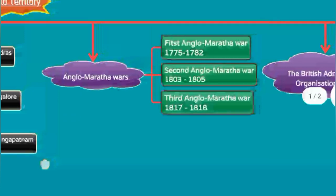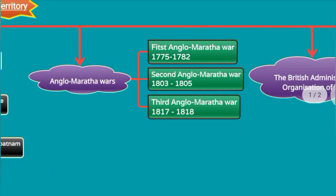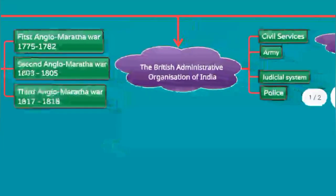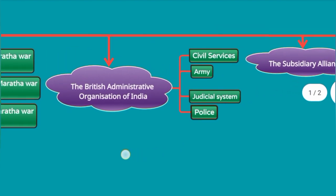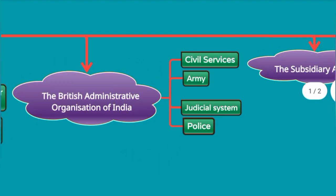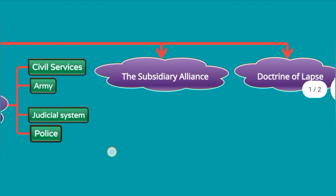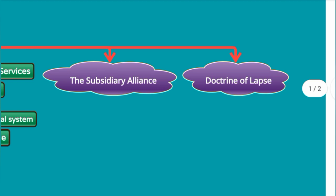Anglo-Maratha Wars: First Anglo-Maratha War 1775–1782. Second Anglo-Maratha War 1803–1805. Third Anglo-Maratha War 1817–1818. The British Administrative Organization of India was run on four principal institutions: civil service, army, judicial system, and police. The Subsidiary Alliance was introduced by Lord Wellesley, and the Doctrine of Lapse was introduced by Lord Dalhousie.